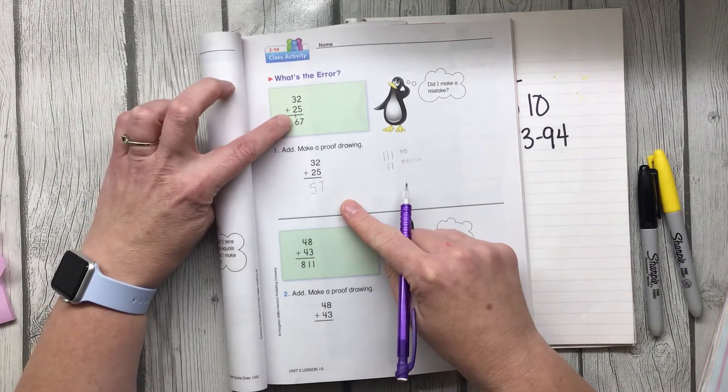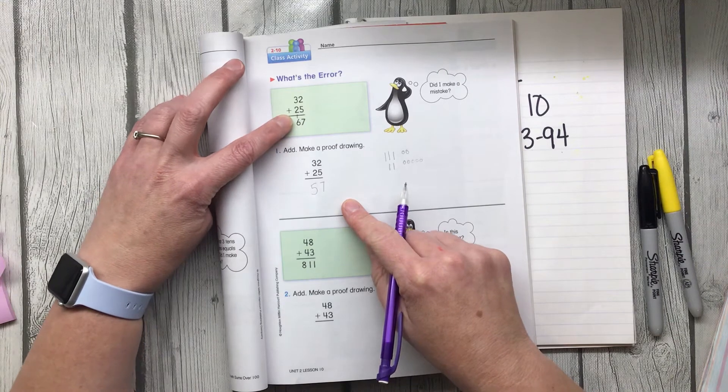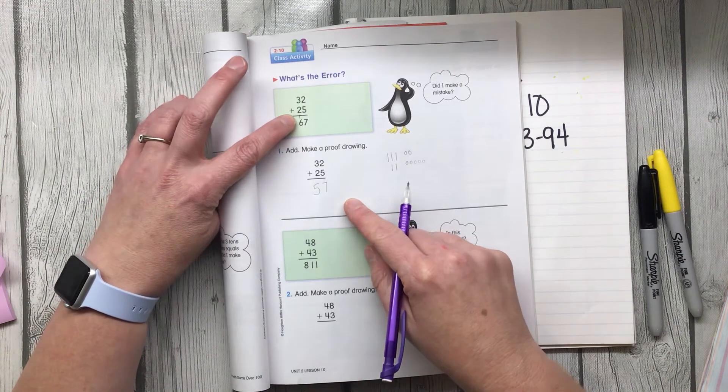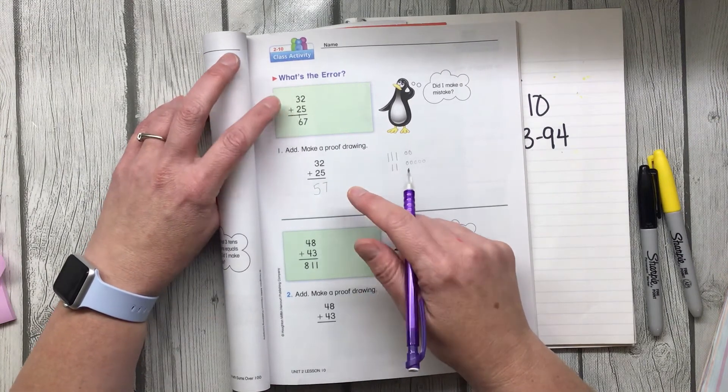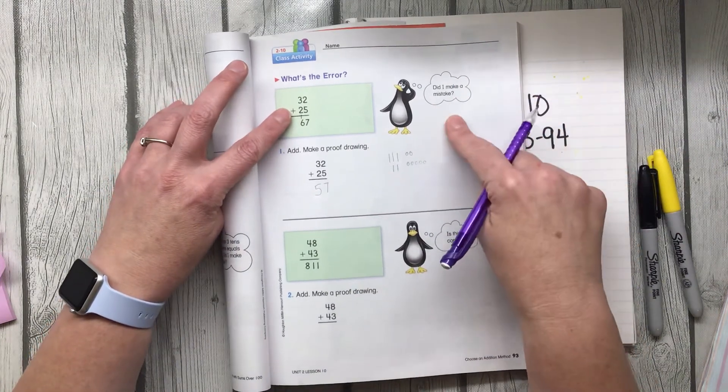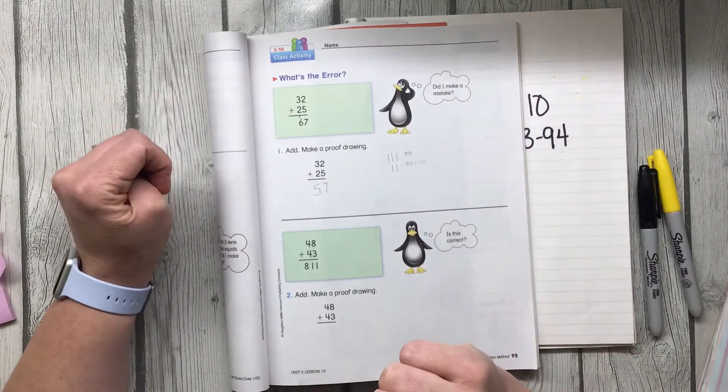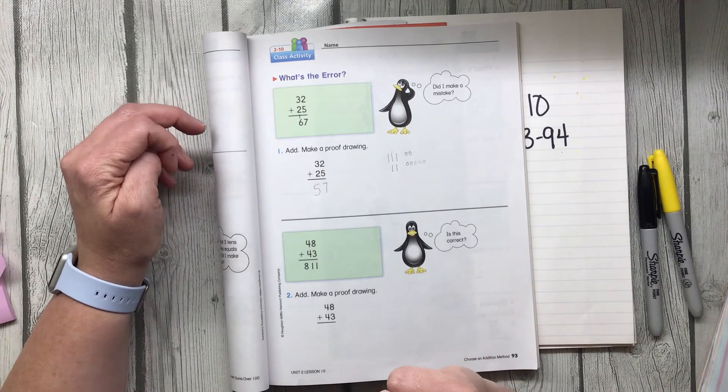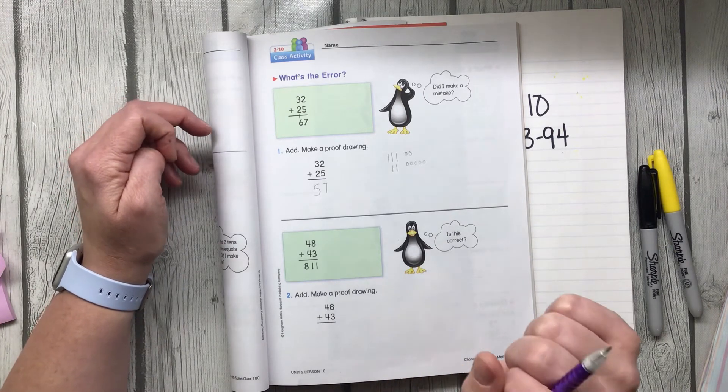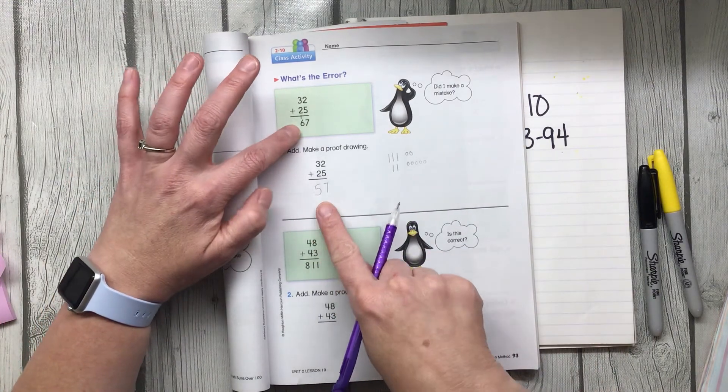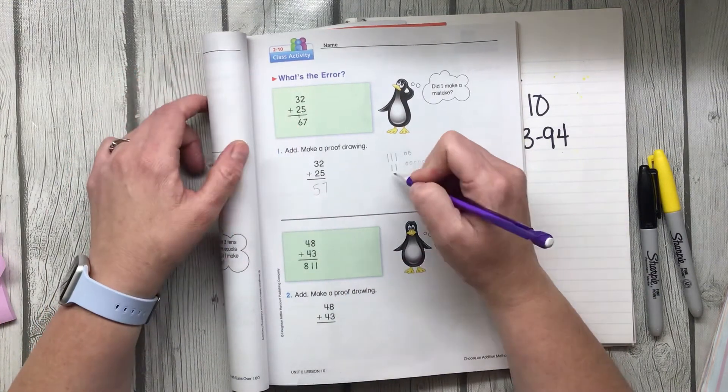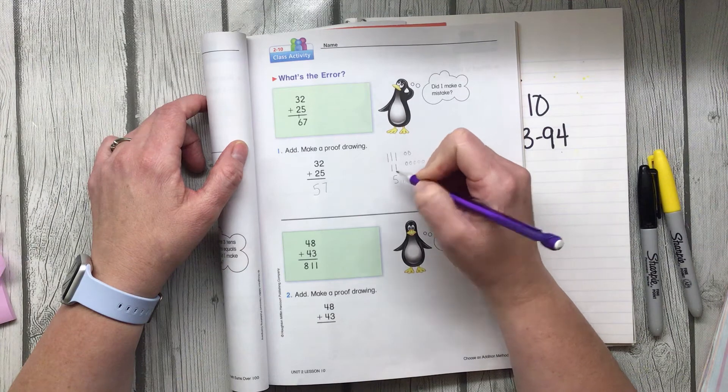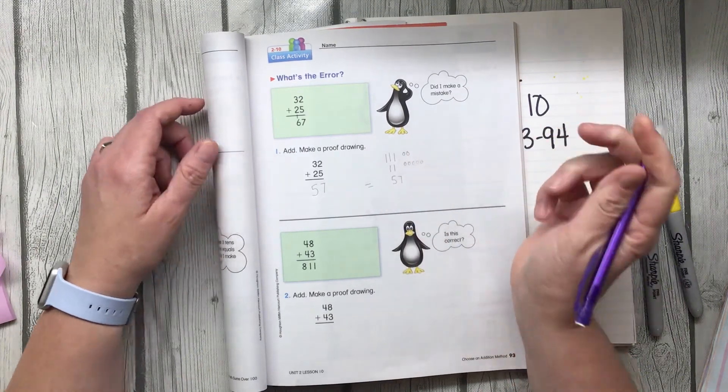But I'm noticing that Puzzled Penguin, he made a new 10 there. That goofball. So did he make a mistake? And so when I go into my breakout room, I'm going to say yes, he made a mistake. He was not supposed to make a new 10. So that's why my answer came out different from his. And this is also 57. Those equal each other.